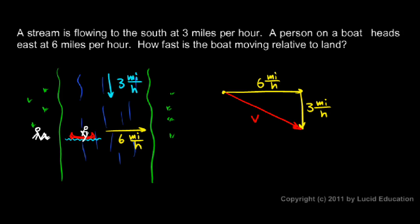We have across the stream, perpendicular to the stream, 6 miles per hour, and the stream itself moving up-down in our diagram, in the vertical direction in our diagram, at 3 miles per hour. So, those are at right angles, so we have a right triangle. We can use the Pythagorean theorem.